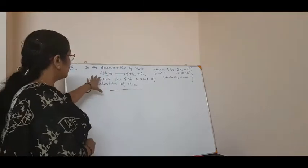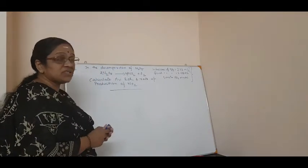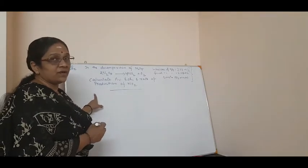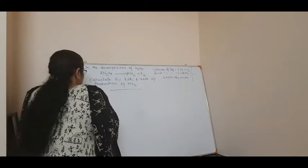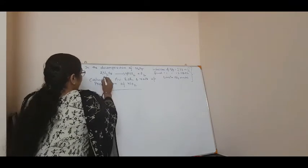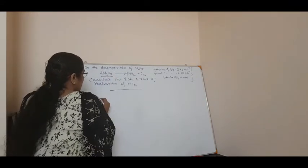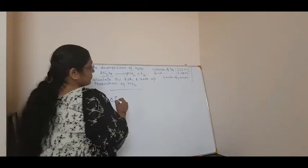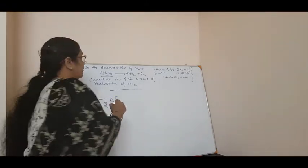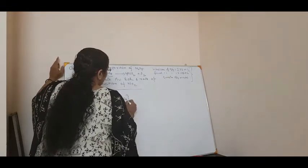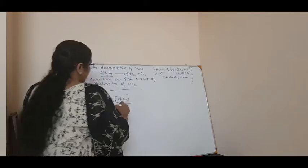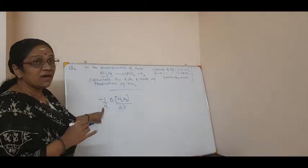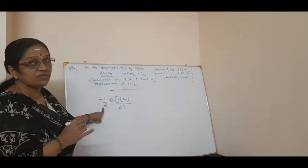How will you calculate the average rate of reaction? First, we will write how to calculate the average rate of reaction. That is, for 2N₂O₅, I can write minus 1 by 2 into delta of concentration of N₂O₅ divided by delta T. Yesterday, we talked about this — you have to divide by the stoichiometric coefficient.